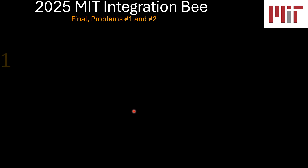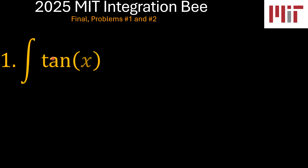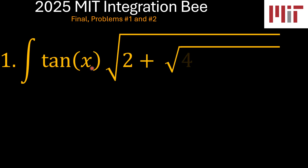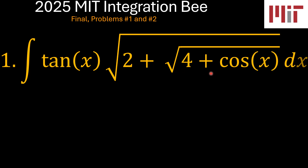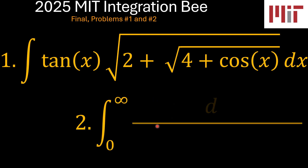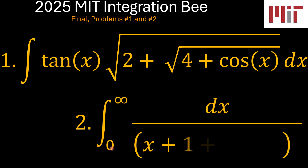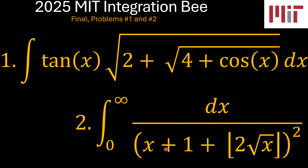Problem number one is the indefinite integral of tangent of x times the square root of 2 plus the square root of 4 plus cosine of x. Problem number two is a definite integral from x equals zero to x tending to infinity of 1 over the square of x plus 1 plus the floor of 2 times the square root of x. These are pretty cool problems in their own right.